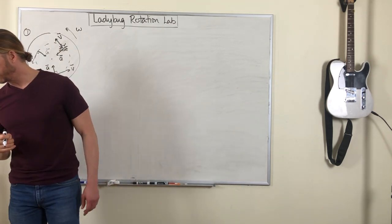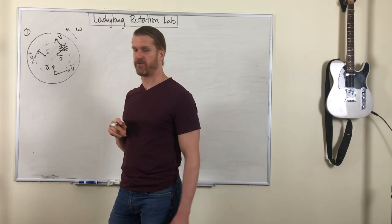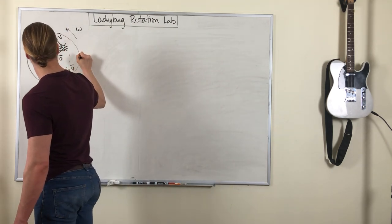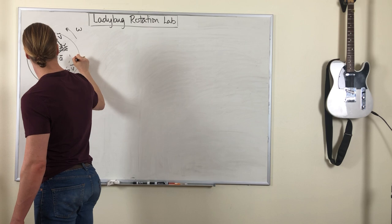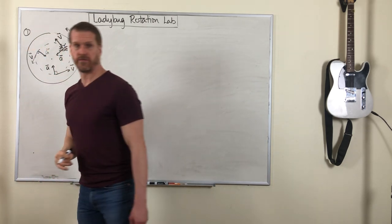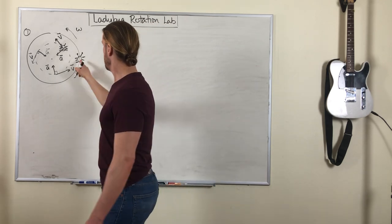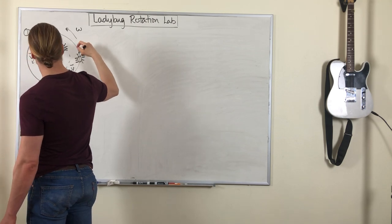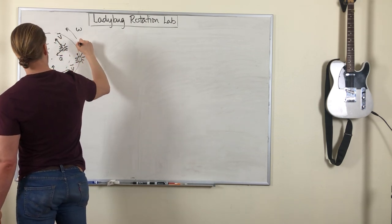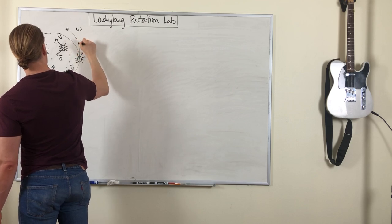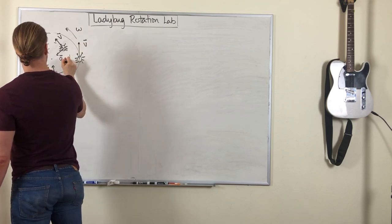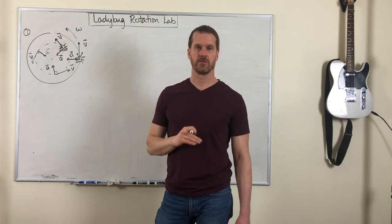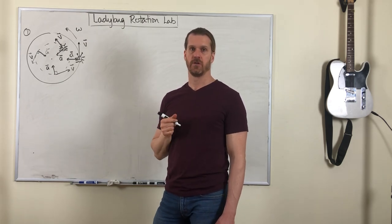So that was question one. Now question two is place a second bug on this platform at a different distance. So maybe we'll put a second bug on the very edge. And what you'll find is that there is a greater velocity vector and a greater acceleration vector, but they still point in those same directions.